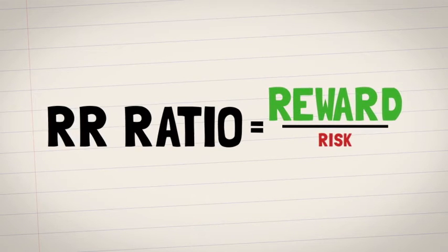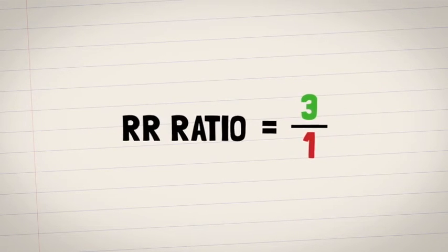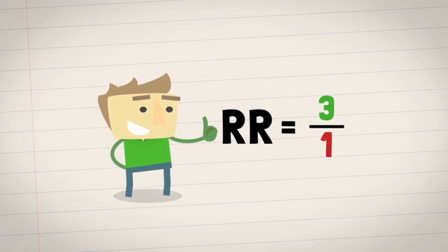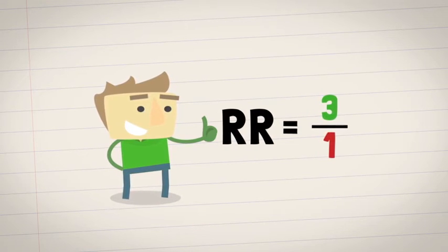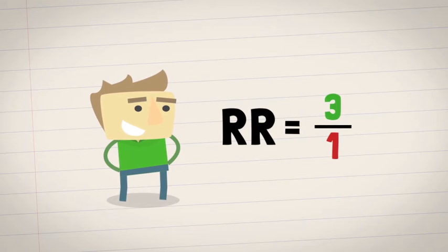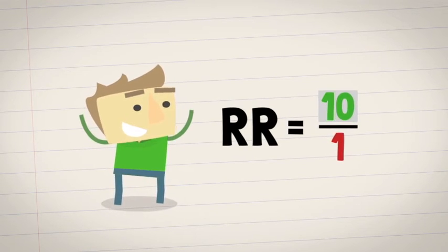Generally, you should be aiming for an RR of at least two to three. This means that your potential upside is two to three times your potential downside. On some trades, it might even be possible to get an RR of seven to ten.